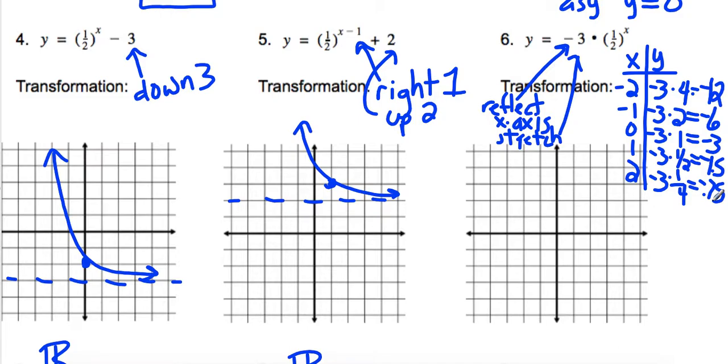Okay. Negative 2, negative 12. I cannot fit that on this graph. So, negative 1, negative 6. Put that in here. 0, negative 3. 1, and negative 1.5. Sorry about that. And, 2, negative 0.75. So, there it is.